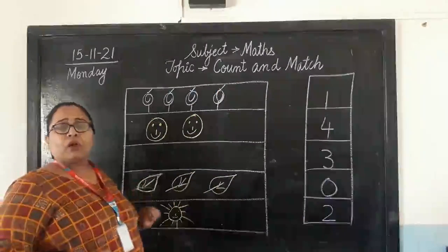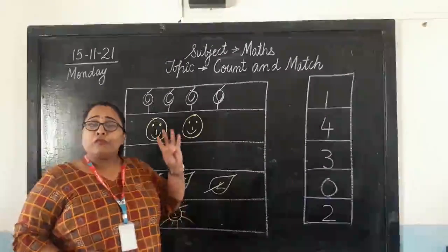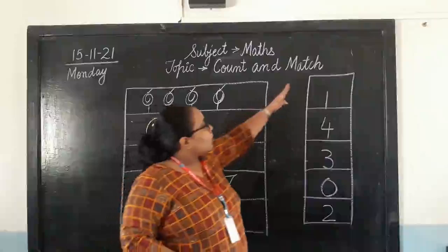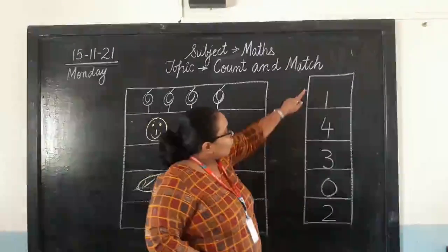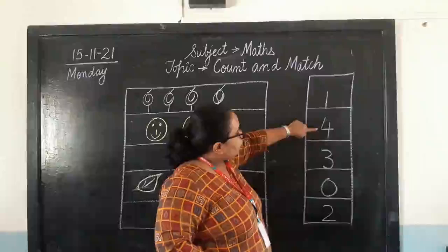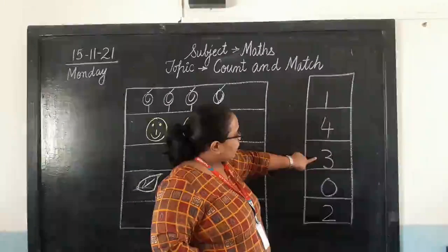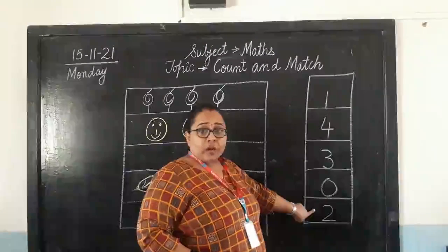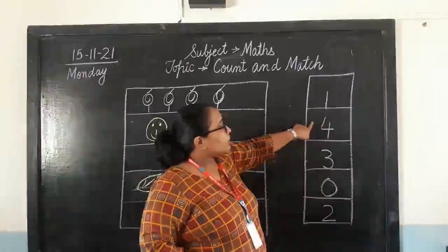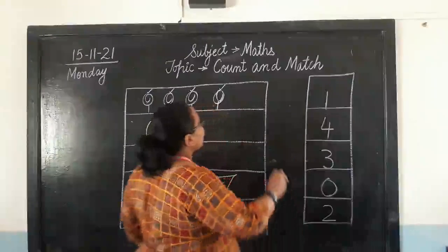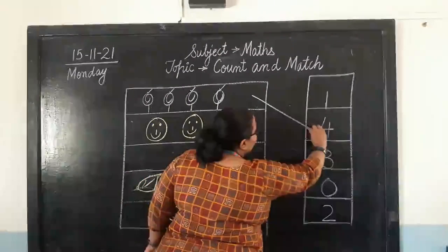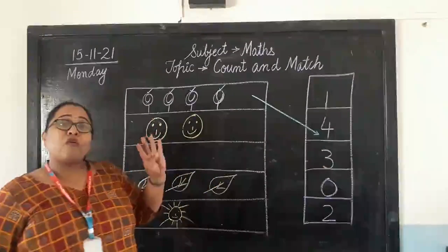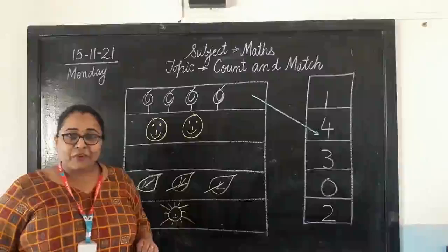So, how many lollipops we have? 4 lollipops. What do you have to do now? Now, let's read the numbers given here. 1, 4, 3, 0, 2. Where is number 4? Here we have. So, we will match lollipops with number 4. Because we have 4 lollipops. Clear everyone?